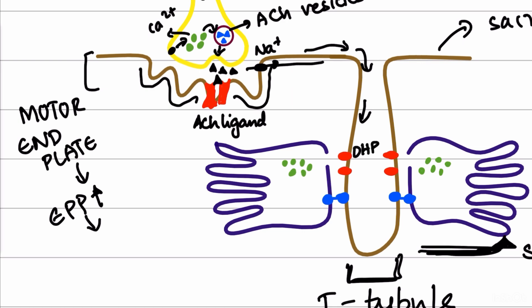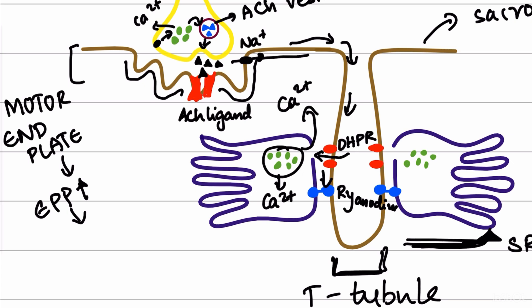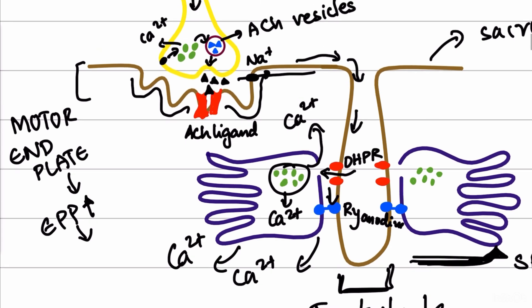In the T-tubules there are receptors called DHPR receptors. These DHPR receptors get activated and are closely connected to the sarcoplasmic reticulum, which contains ryanodine receptors. When the ryanodine receptors are activated, the calcium molecules stored inside the sarcoplasmic reticulum are released into the cytoplasm of the muscle cell.